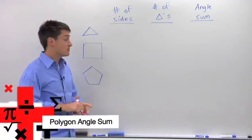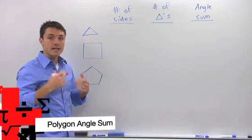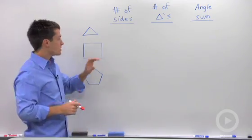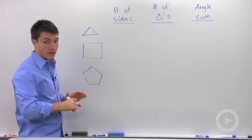We need a formula that will tell us the sum of the angles in any polygon. So we're going to start by looking at a triangle, a square, and a pentagon.